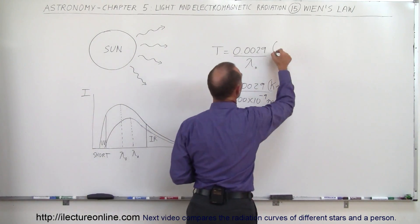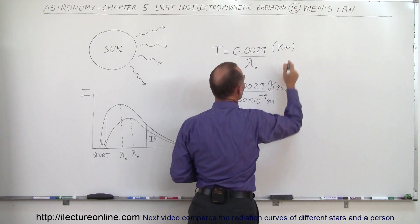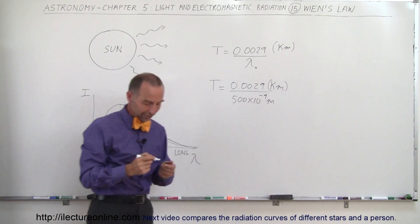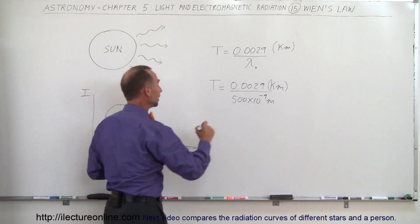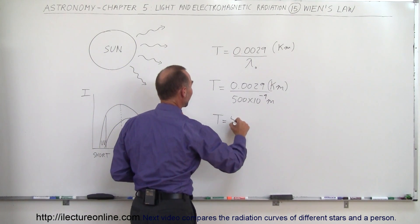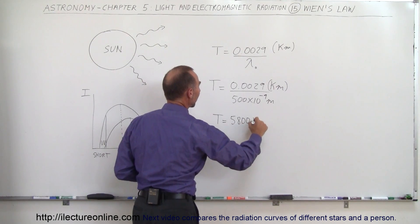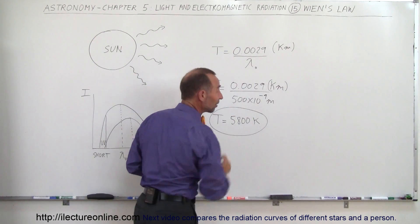So maybe I'll put Kelvin times meters up here, and so then the meters cancel out, we end up with Kelvin. And if we then calculate that, the answer then would be T is equal to 5,800 Kelvin which is indeed the surface temperature of the sun.